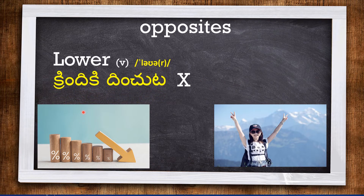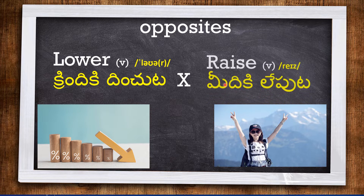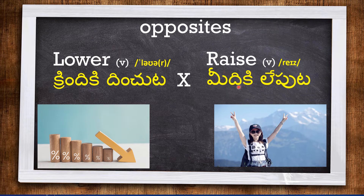The next word is LOWER, meaning to bring something down. Here in this diagram you can see something has been lowered or reduced. The opposite of lower is RAISE. This lady has raised her hands.